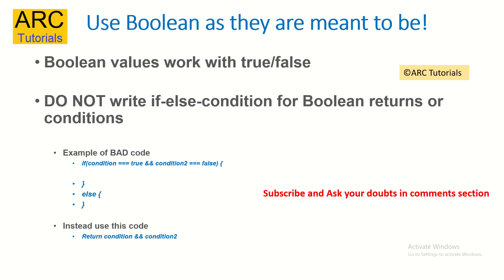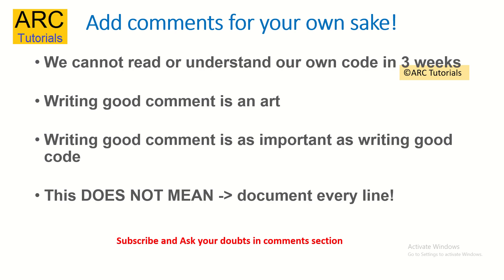The next tip: use boolean values as they are meant to be. I see a lot of code written with if-else conditions even for boolean values — don't do that. Boolean values are supposed to be true or false. You don't have to write an if block checking whether the condition is true; you can simply return based on the condition and it will return true or false directly. Using unnecessary if-else blocks increases your lines of code and is not good practice.